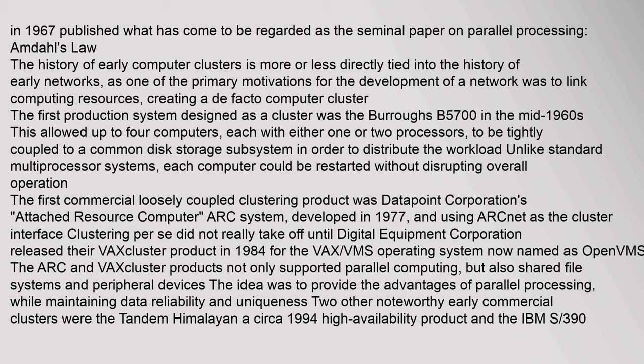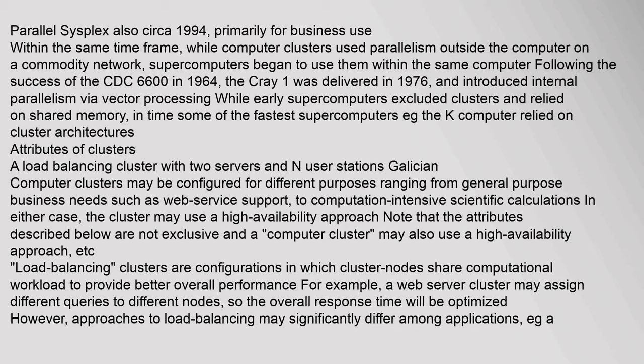Clustering per se did not really take off until Digital Equipment Corporation released their VAX cluster product in 1984 for the VAX/VMS operating system, now named OpenVMS. The ARC and VAX cluster products not only supported parallel computing but also shared file systems and peripheral devices. Two other noteworthy early commercial clusters were the Tandem Himalayan (circa 1994, a high availability product) and the IBM S/390 Parallel Sysplex (also circa 1994), primarily for business use. Within the same time frame, while computer clusters used parallelism outside the computer on a commodity network, supercomputers began to use parallelism internally.